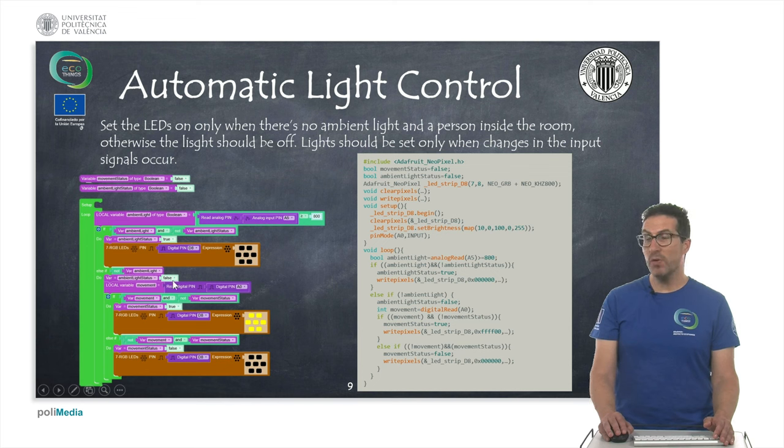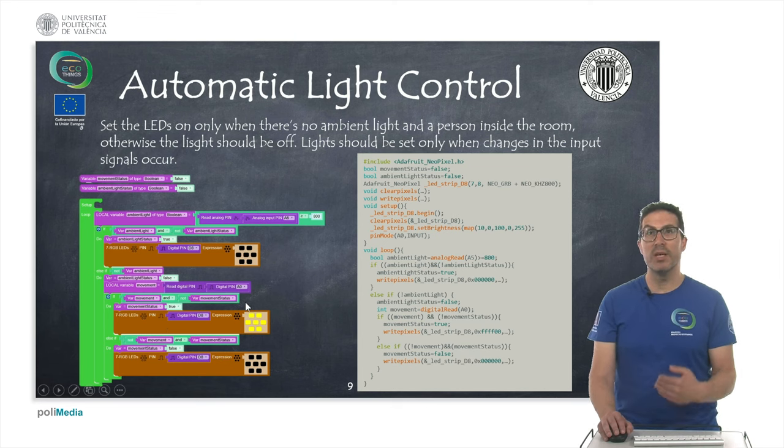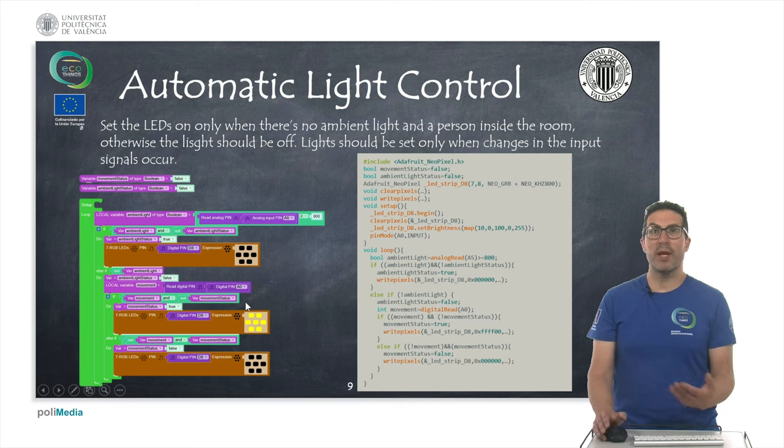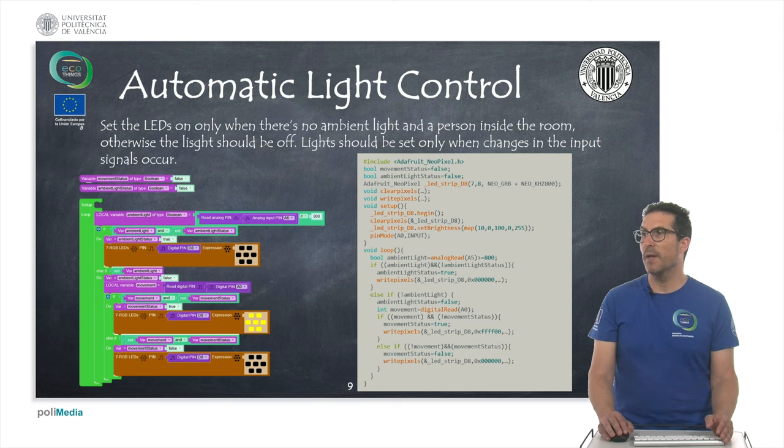But if we have no light, then we set the status to false and then here we detect the presence of a person. And if there was no one there before, then we turn on the lights, but immediately the movement status will be set to true. So that means that even if there's a person inside, we will not be executing this instruction. So we are not setting and forcing the light to be yellow repeatedly. We need to execute this instruction just once. And if this condition becomes true, then we will turn off the lights.